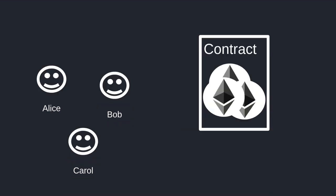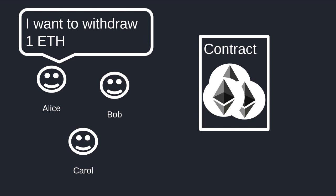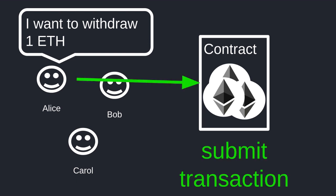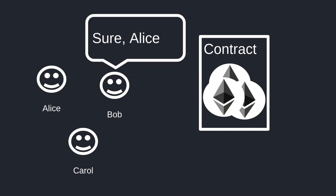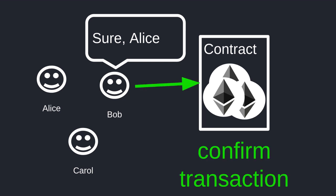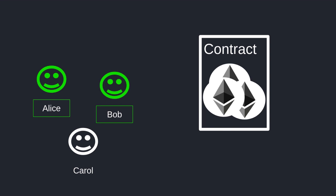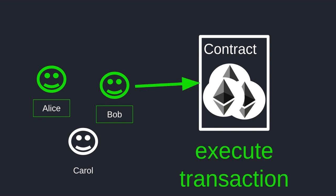Next, I'm going to explain how we're going to implement a multisig wallet with a smart contract. Let's say that Alice wants to withdraw one ether. She proposes a transaction that can be executed if at least two owners approve. Bob agrees that Alice can withdraw one ether and approves Alice's proposed transaction. We now have the required number of approvals, so any of the owners can execute this transaction.